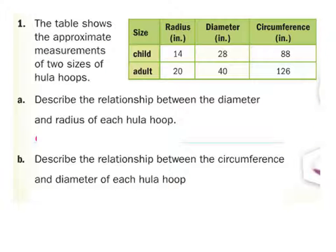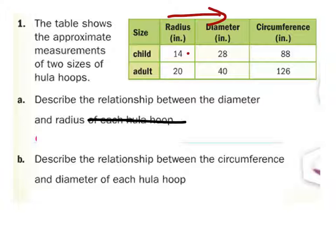In the last chapter, we learned about scale factors. In this example, we're looking at the approximate sizes of hula hoops for adults and children. It gives us the radius, the diameter, and the approximate circumference. We need to describe the relationship between the diameter and radius of each hula hoop — really it's just the relationship of diameter and radius in general. If we go from radius to diameter, we can see it has a scale factor of two.